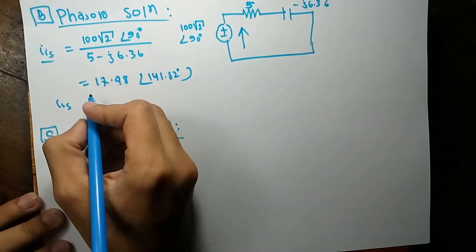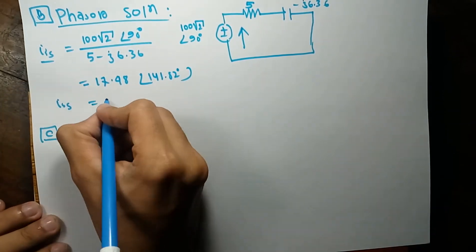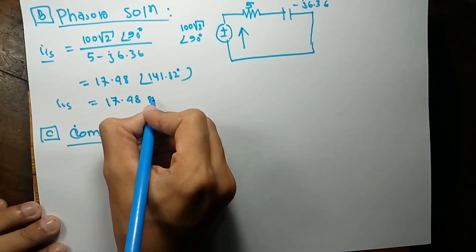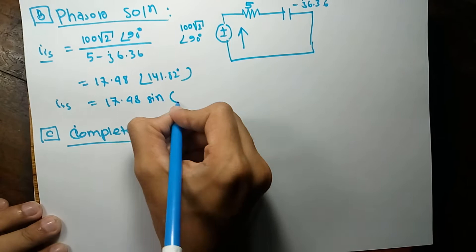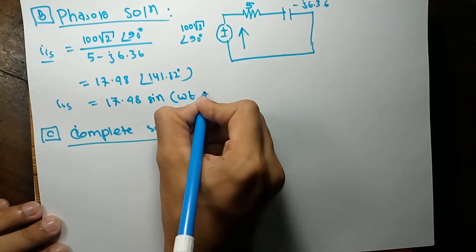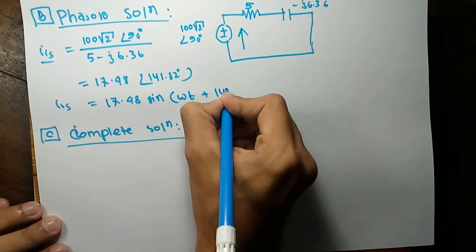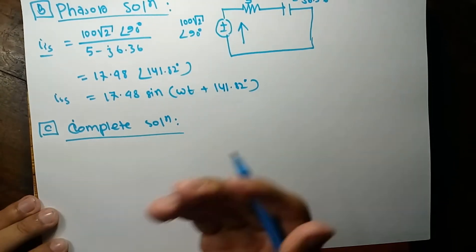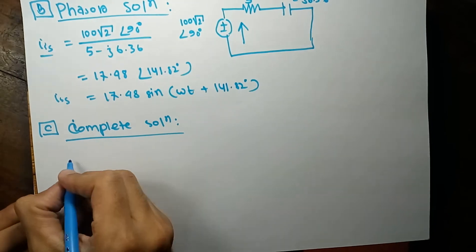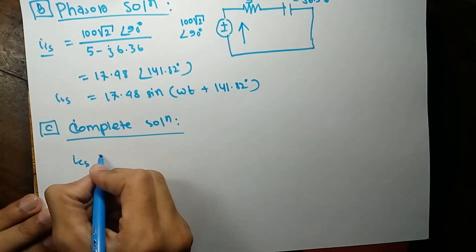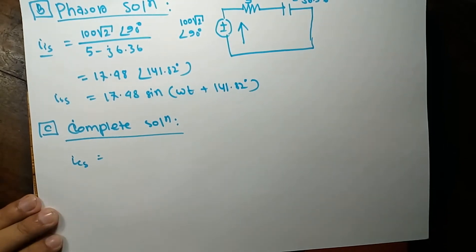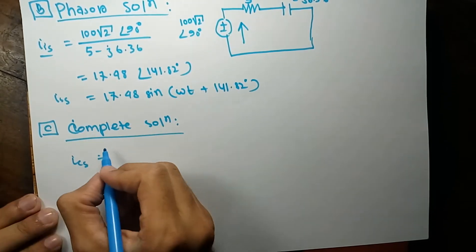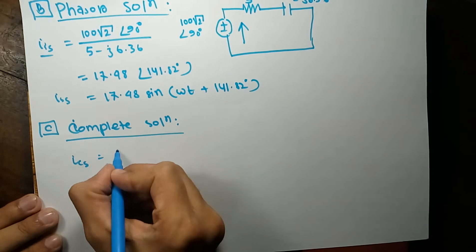The steady-state current phasor evaluates to 70.48 ∠141.82°. In the time domain, the steady-state current is I_ss = 70.48·sin(ωt + 141.82°). The complete solution is simply the superposition of the transient and steady-state solutions.